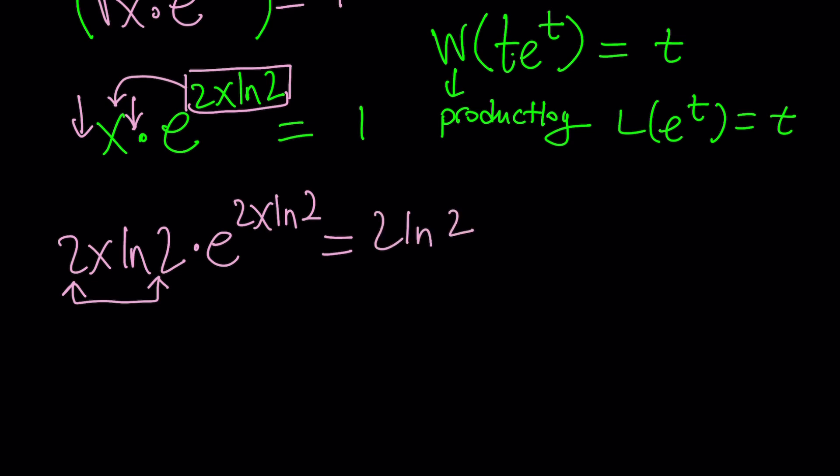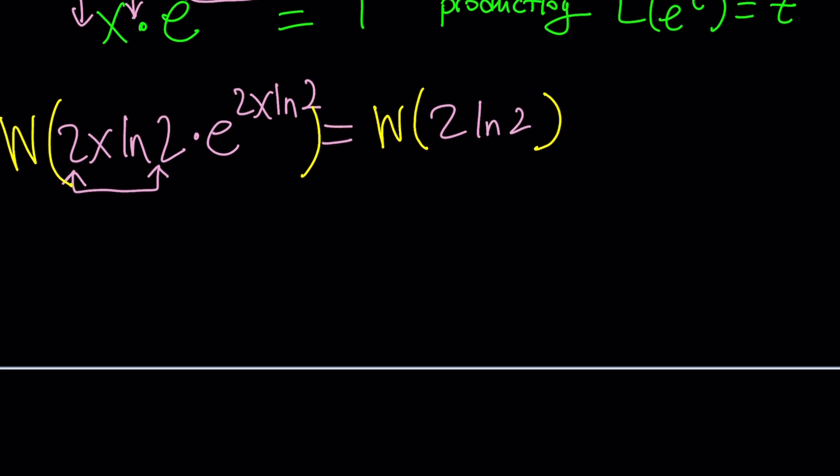Now we're going to apply Lambert's W function. But let me go ahead and make a little bit more space here. And then I can Lambert both sides with my big W. And then let's see what happens from here. First of all, this is my t. So the output is going to be t's, which is 2x ln two. And then on the right hand side, I have Lambert W of, or W of, 2 ln two.